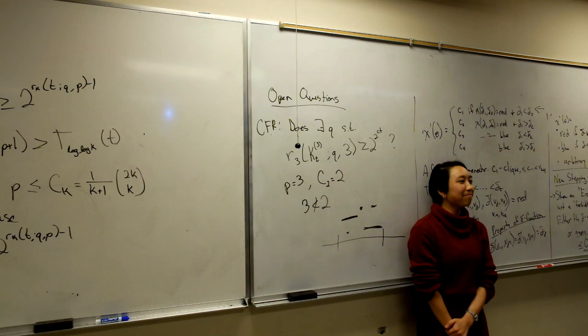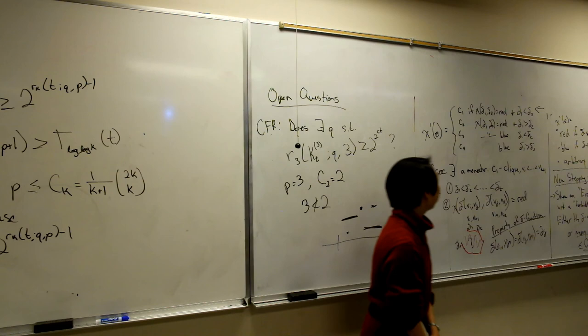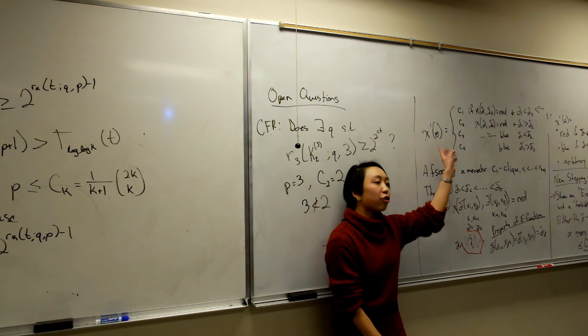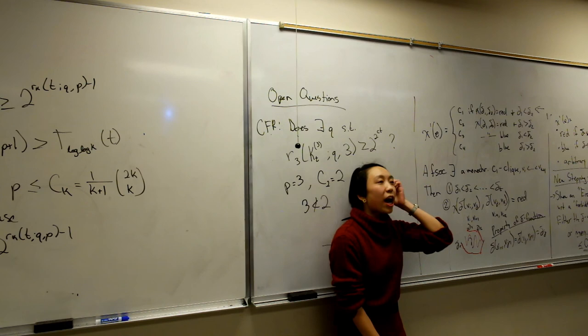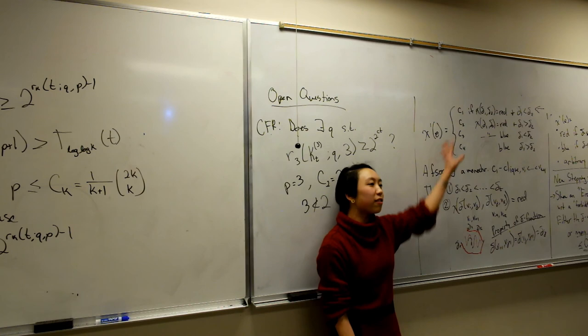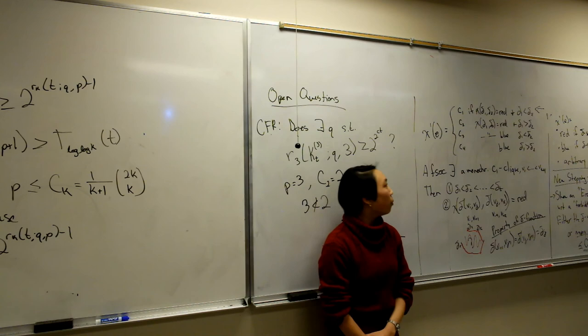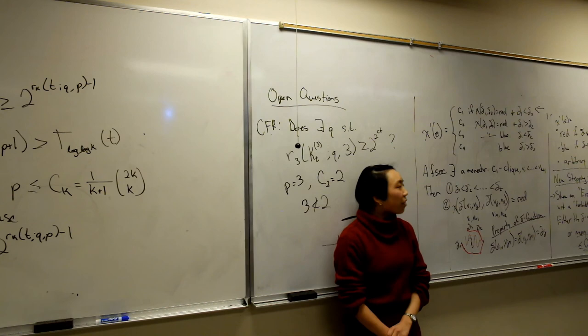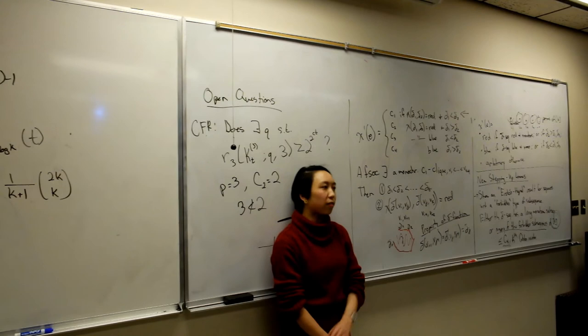Was the first stepping up example shown essentially the Mubayi-Suk type? This was actually the original Erdős-Hajnal stepping up lemma from their 1972 paper — they go straight to doing it for K-uniform, so what I showed was even a simplification. There are a lot of variants on stepping up lemmas for different scenarios, and the Mubayi-Suk paper and our paper each use slightly different variants.